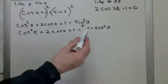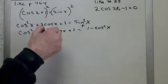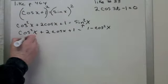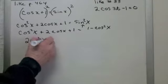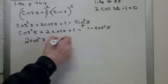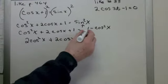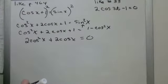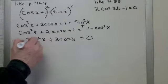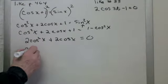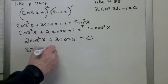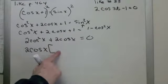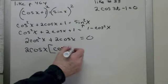Now I'm going to move everything on one side. When I do, I'm going to subtract the 1 and add the cosine squared. So that gives me 2 cosine squared x plus 2 cosine x equals 0. Now if I want to continue solving this, I notice that I could factor out a 2 and a cosine x. So I have cosine x plus 1.